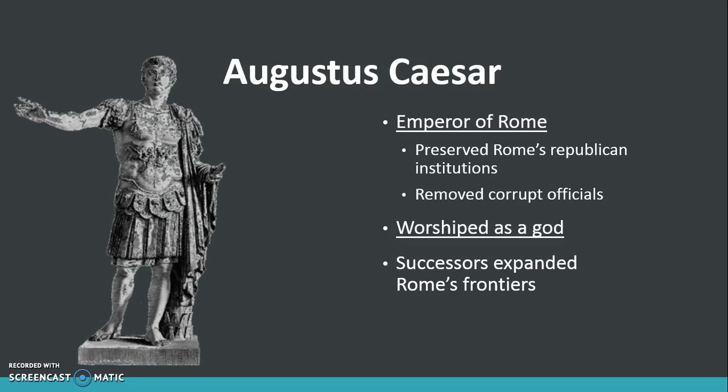His successor was Augustus Caesar. He became the next emperor of Rome. He preserved Rome's republican institutions and removed corrupt officials from power. He was worshipped as a god by his followers, and his later successors expanded all of the Roman frontiers.